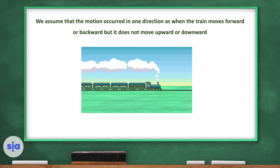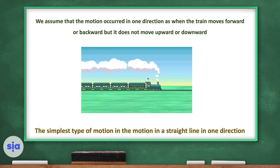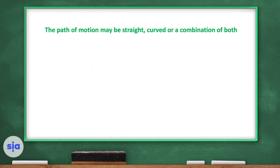Look at this train — it is moving forward in one direction in a straight line. It's not moving upward or downward, it's not changing its direction. The simplest type of motion is motion in a straight line in one direction. The path of motion may be straight, curved, or a combination of both.